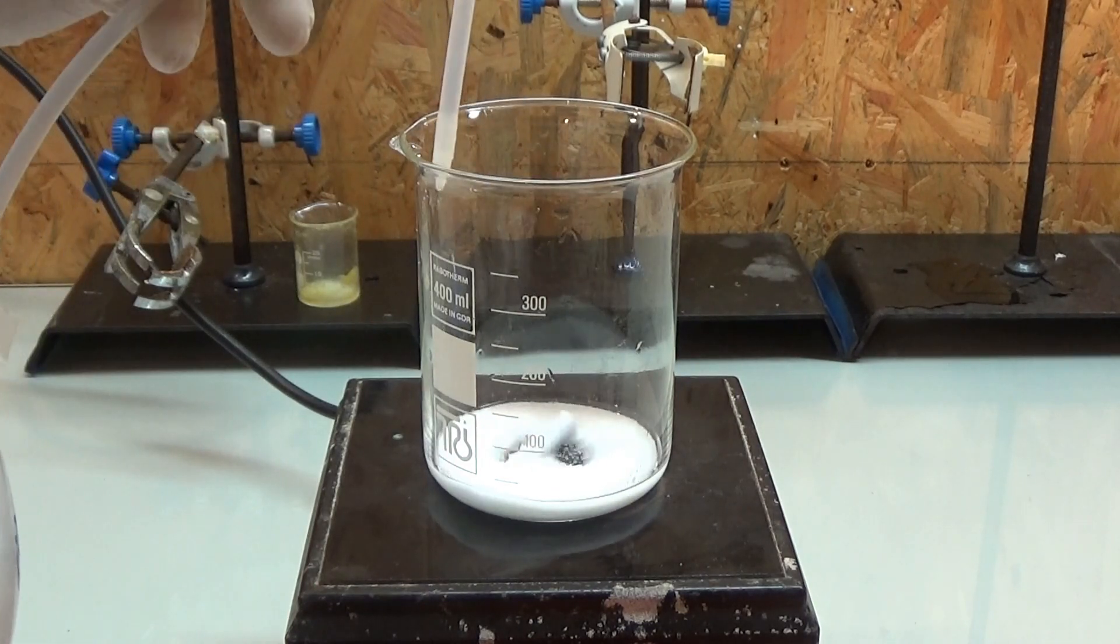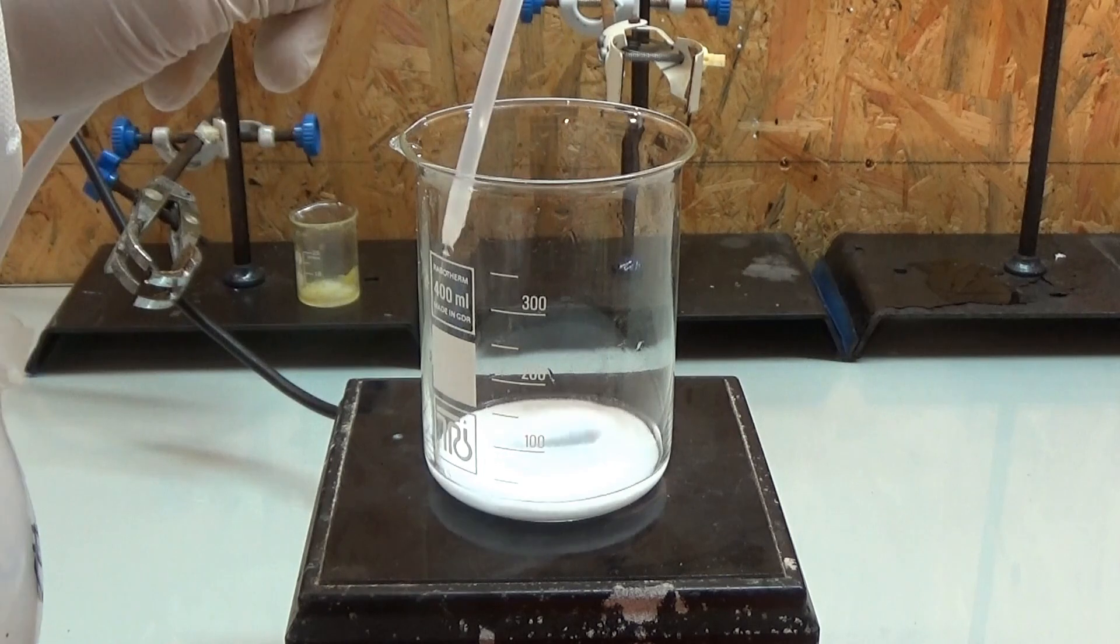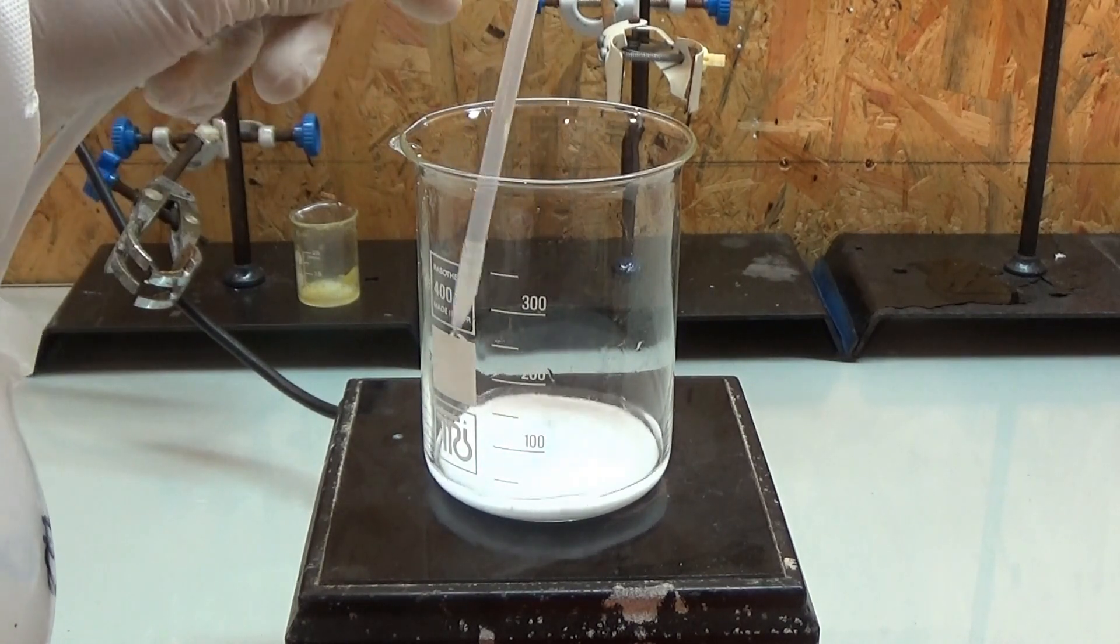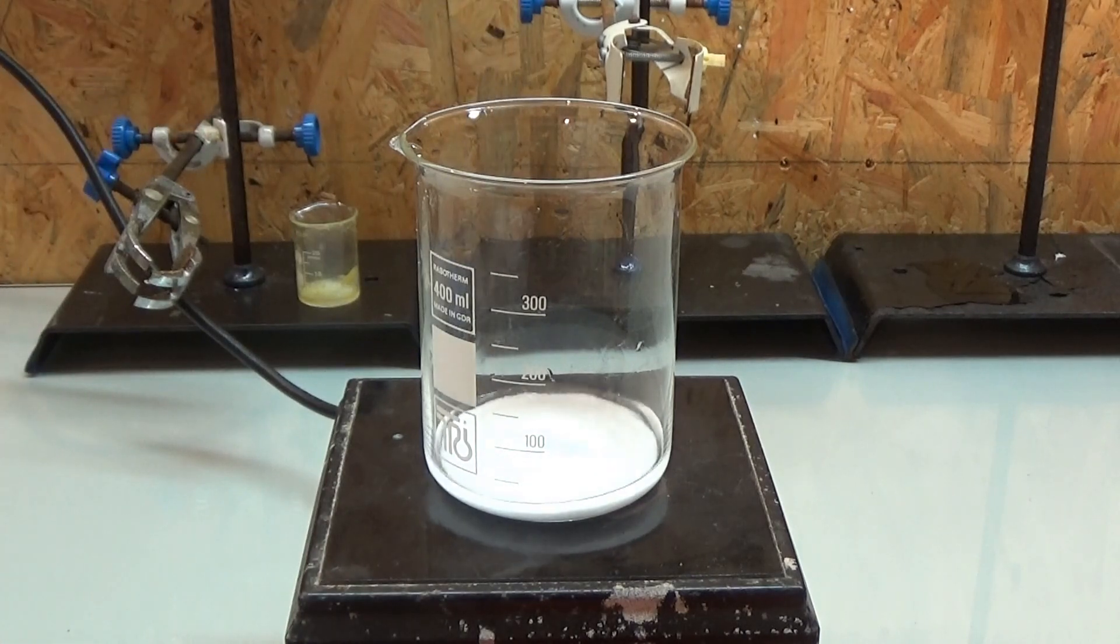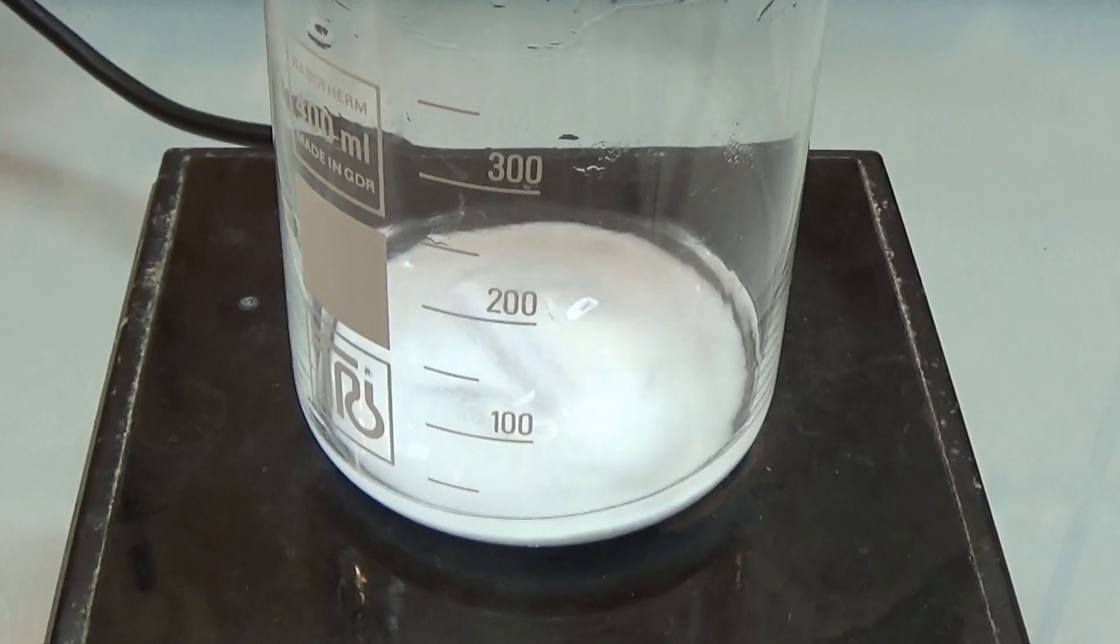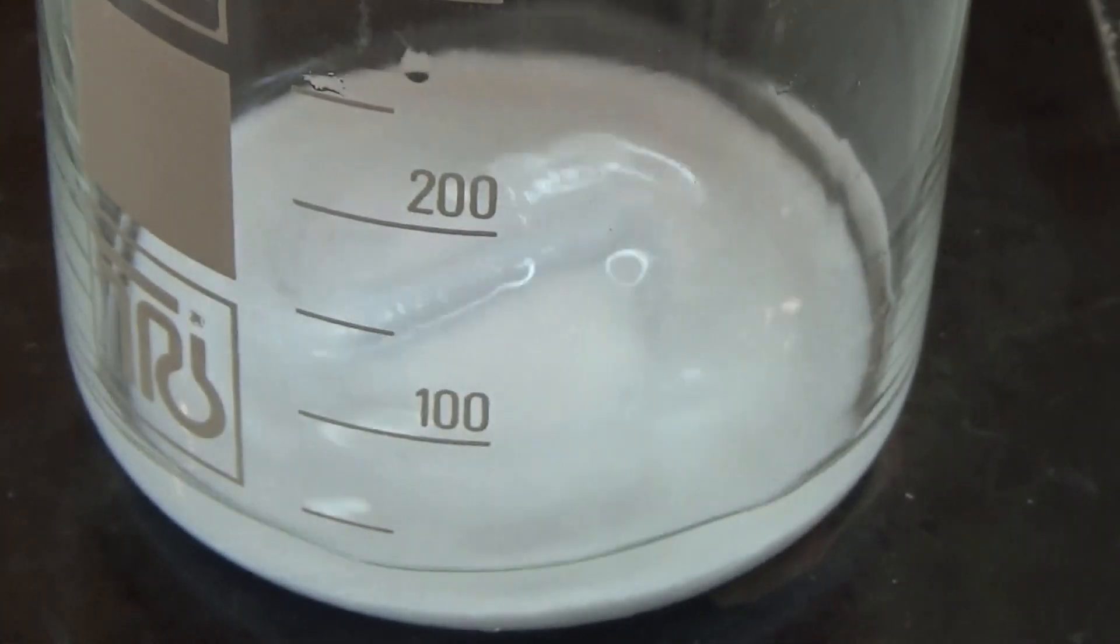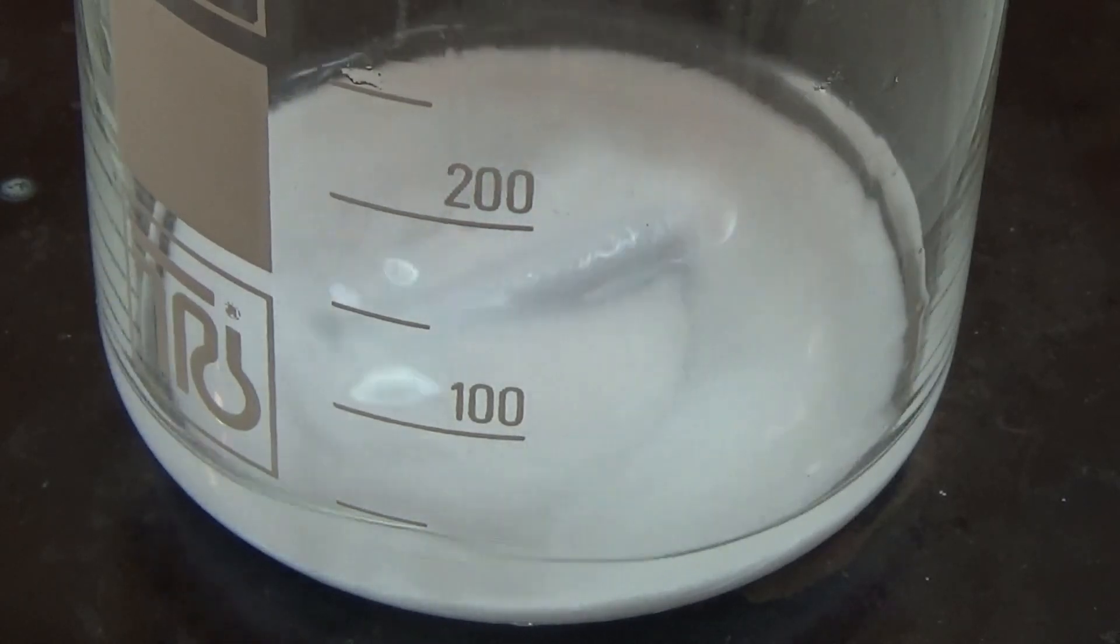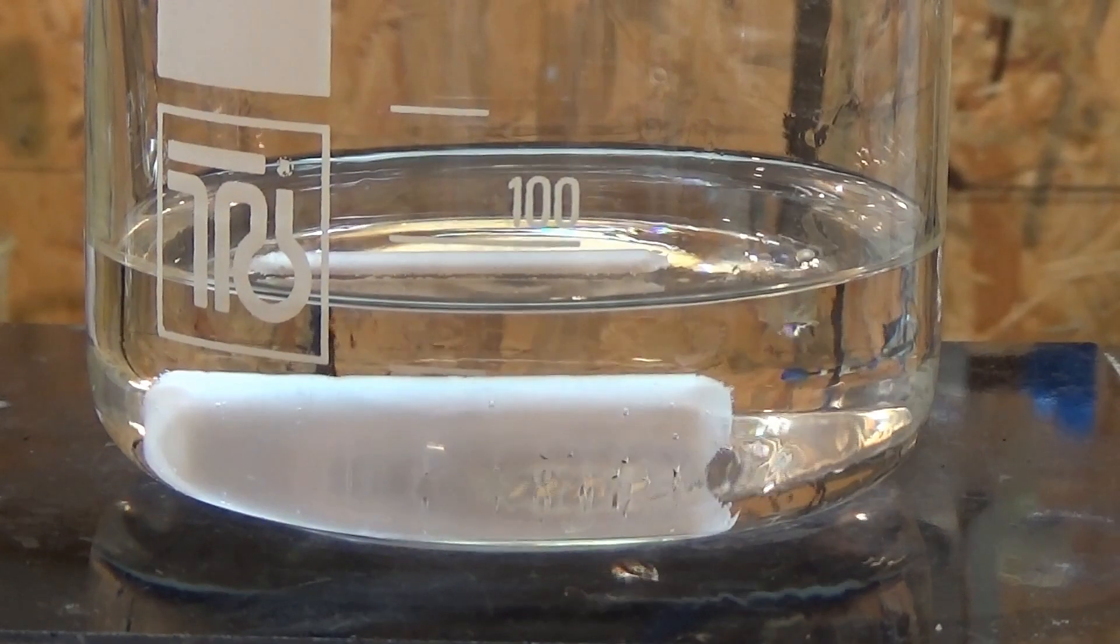The idea behind a recrystallization is that the different substances have different solubilities in the solvent of choice. Ideally the product you desire is highly soluble in the warm solvent and only slightly in the cold one. The side products are just more soluble anyway. Or should be. So that's the theory, let us see if I am correct or if the manufacturers used some nasty stabilizer to ruin my day.